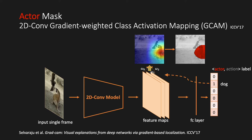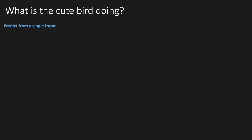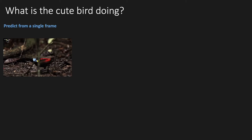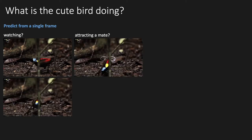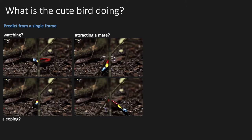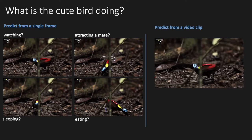Now the question is: can we infer an action mask using 2D Comb GCN? Let's take a look at this interesting example. Can you guess from a single frame what this lovely bird is doing? Watching somewhere? Attracting a mate nearby? Is it sleeping? Busy eating? As you can see, it's pretty hard to determine the final answer — it all depends on which frame is sampled.